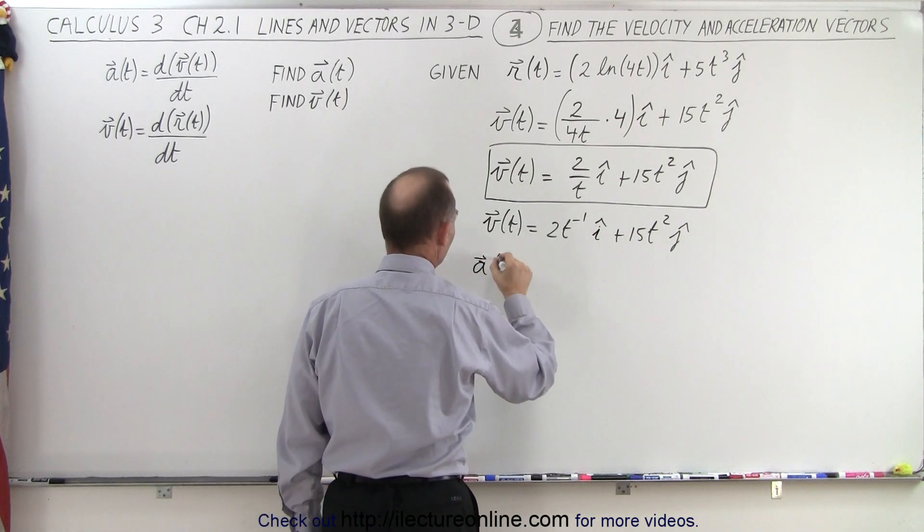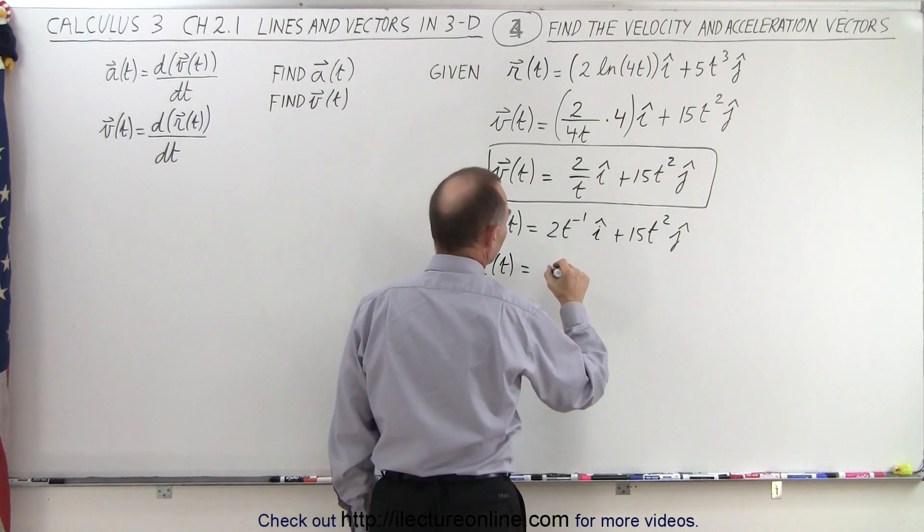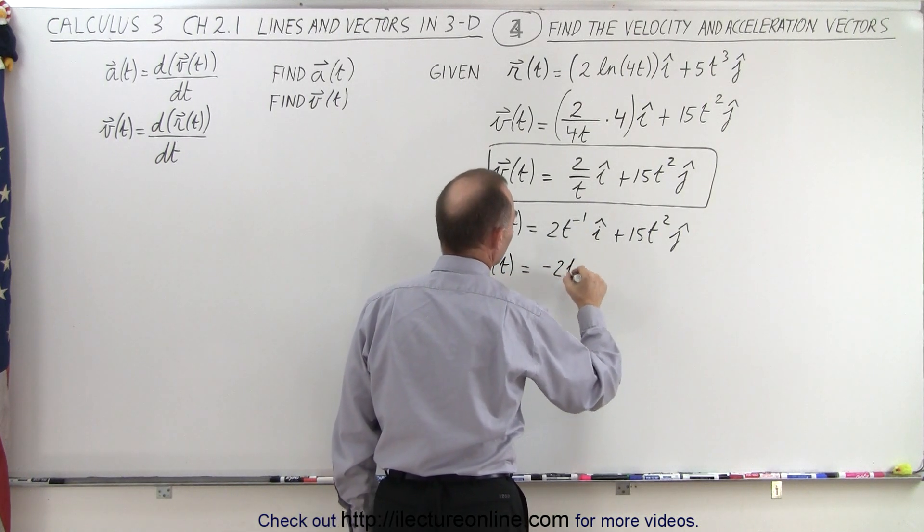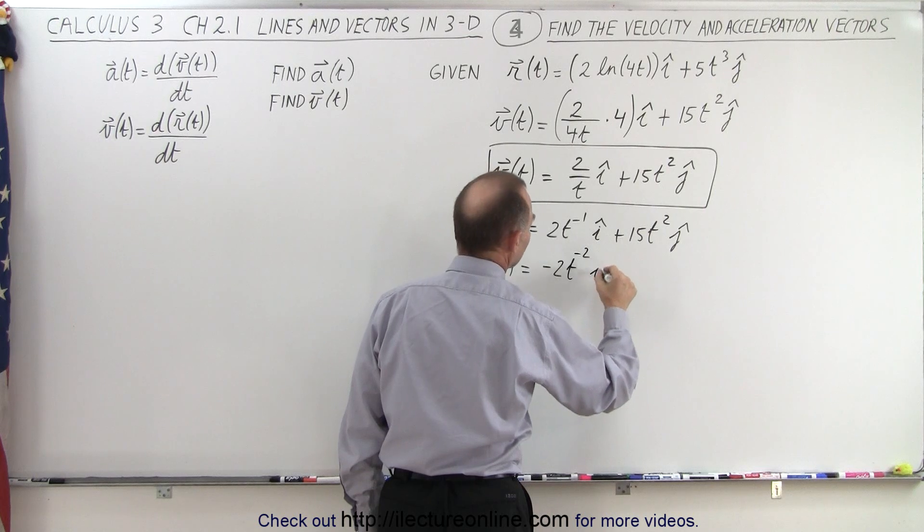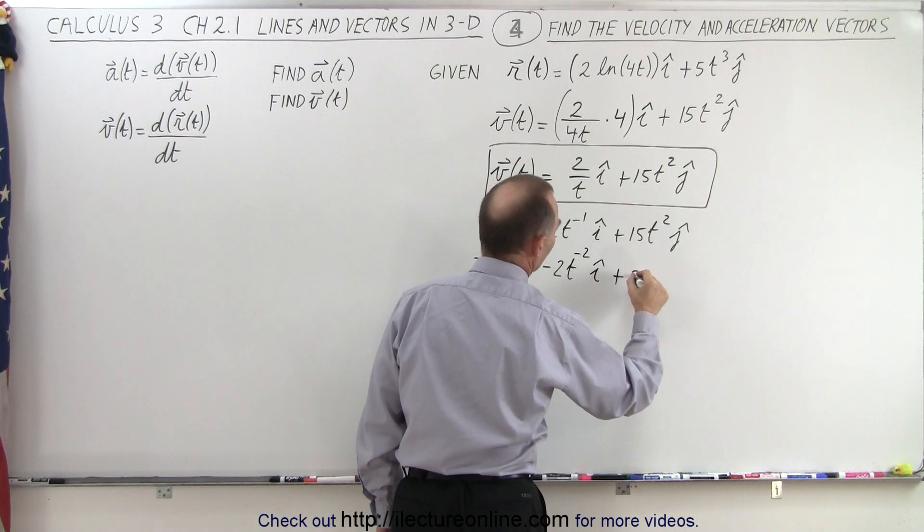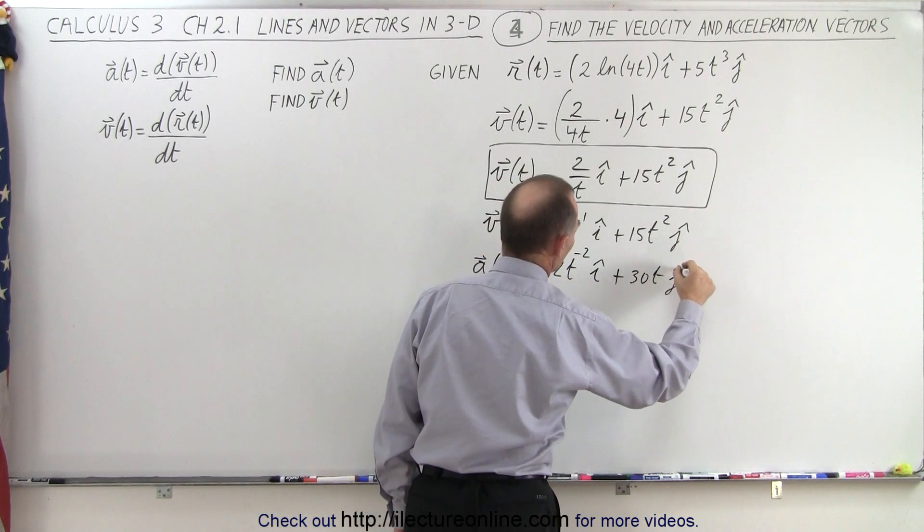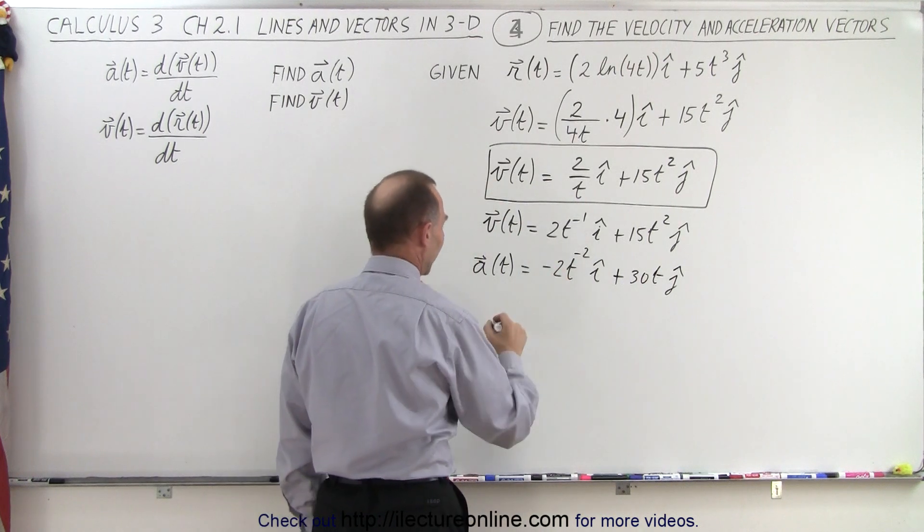So the acceleration as a function of time is equal to, that would be minus 2t to the minus 2 in the i direction, plus 30t in the j direction.